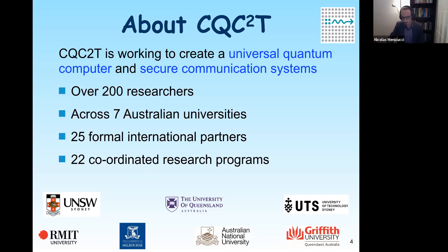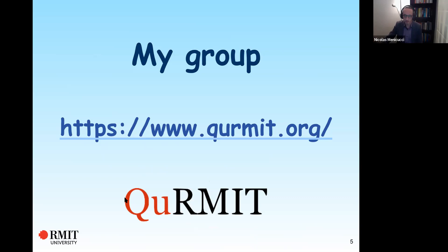My group at RMIT, we call it Kermit — it's pronounced Kermit. Q-U is alluding to quantum, of course. If you want to check us out, feel free to go there. We do more than just quantum computing; we also do some fundamental physics work.